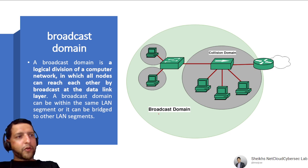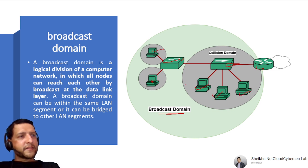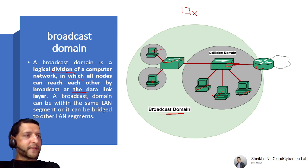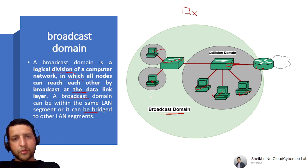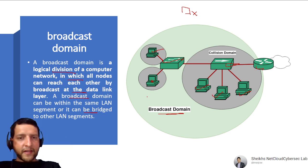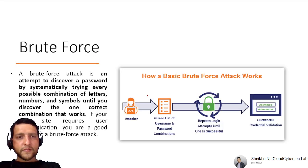A Broadcast Domain is a logical division of a computer network in which all nodes can reach each other by broadcasting at the data link layer. All devices in the same broadcast domain can hear a broadcast. Routers normally do not forward broadcasts — they separate broadcast domains. However, a DHCP relay agent can forward broadcast as unicast to a DHCP server on another network.